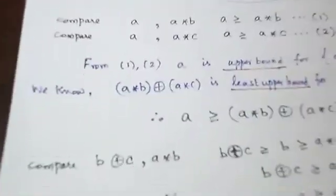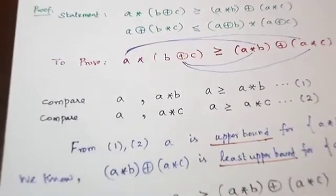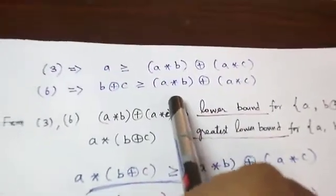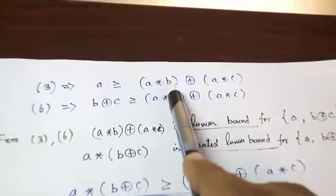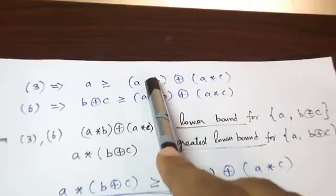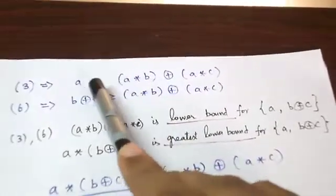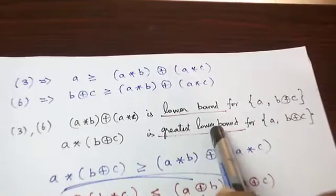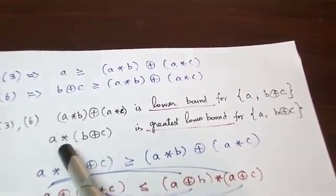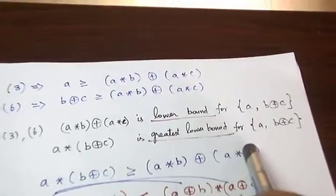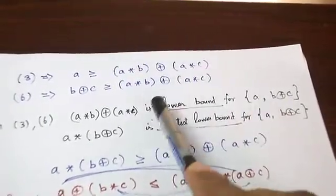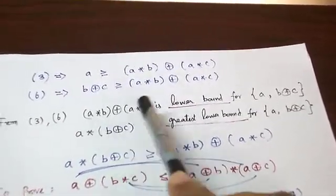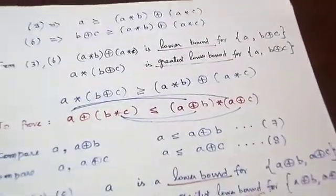Now taking inequalities 3 and 6 together: from 3, A ≥ A★B + A★C, and from 6, B+C ≥ A★B + A★C. Combining these two, A★B + A★C is a lower bound for A and B+C. The greatest lower bound for A and B+C is A★(B+C). Comparing, A★(B+C) is greater than or equal to A★B + A★C. This gives us the first distributive inequality.